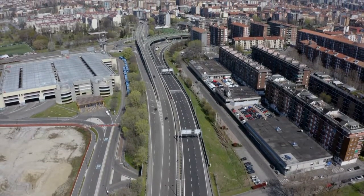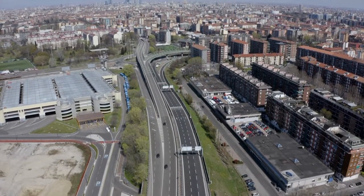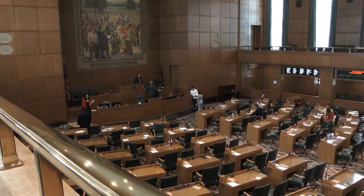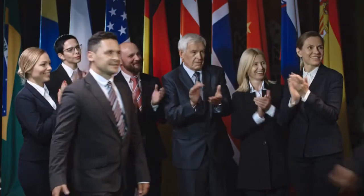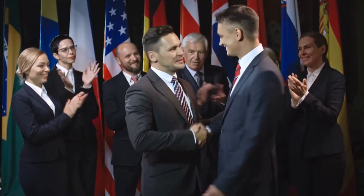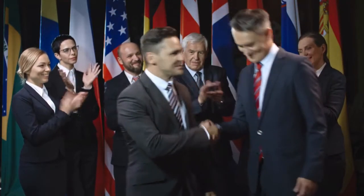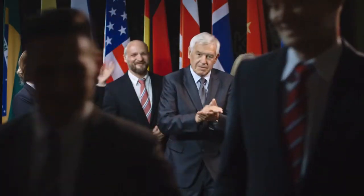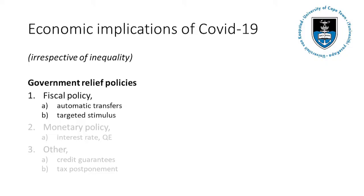Besides implementing lockdown policies to stop or slow down the virus, the government also has a host of policies at its disposal to mitigate the economic damage that both lockdowns and the virus can cause. These can be roughly divided into three categories. First and foremost, there's fiscal policy, which refers to the government spending more to offset the reduced spending by people and businesses.